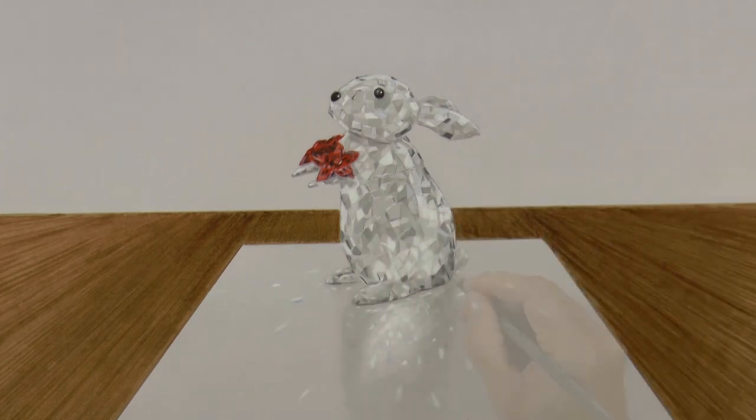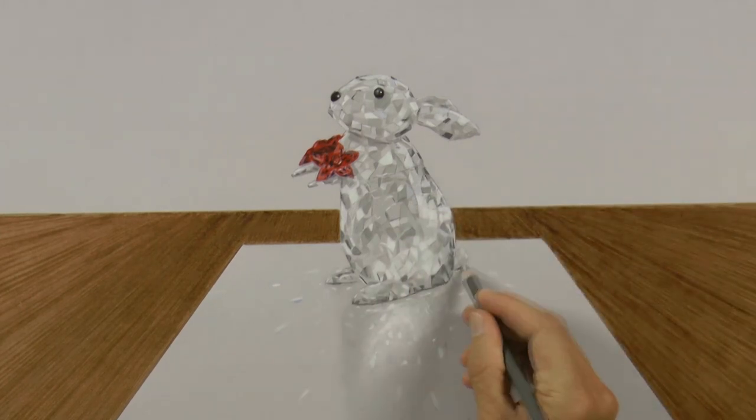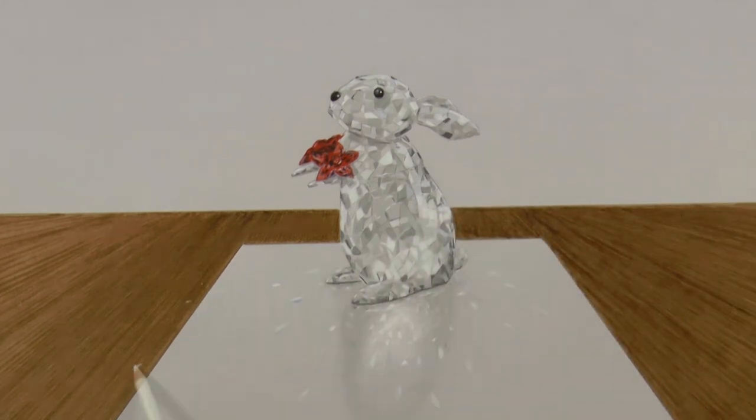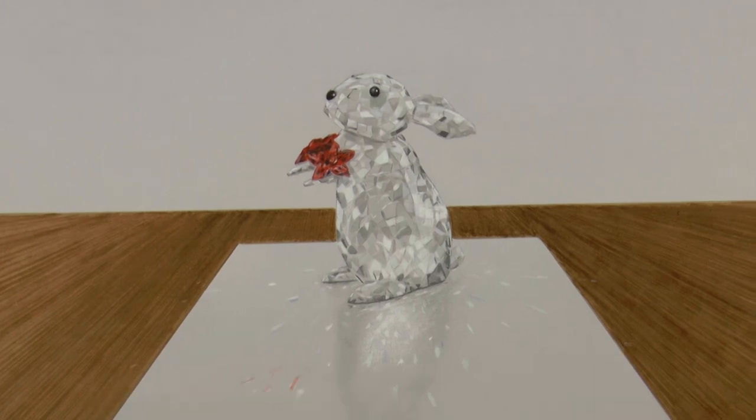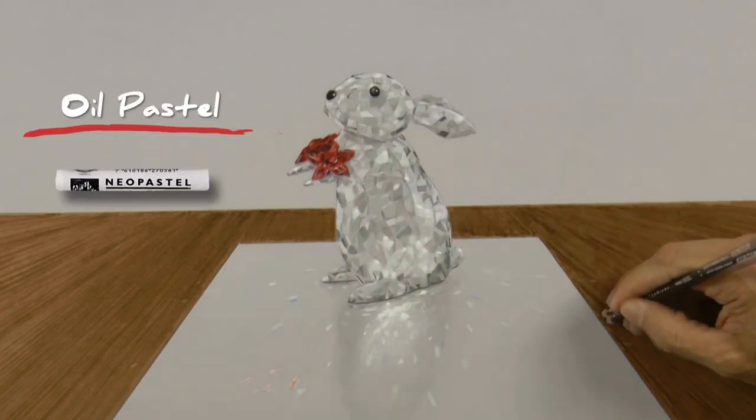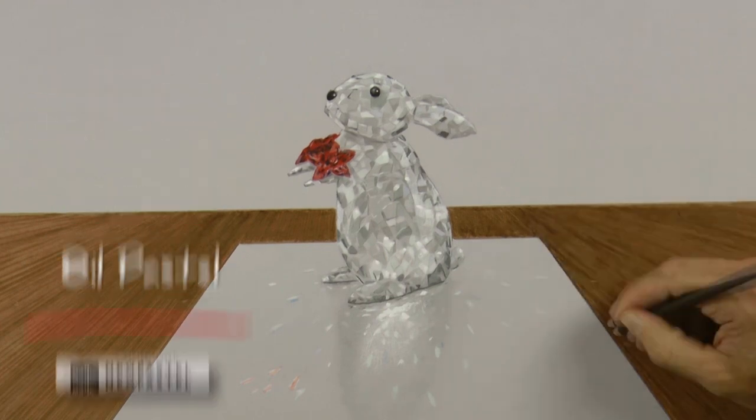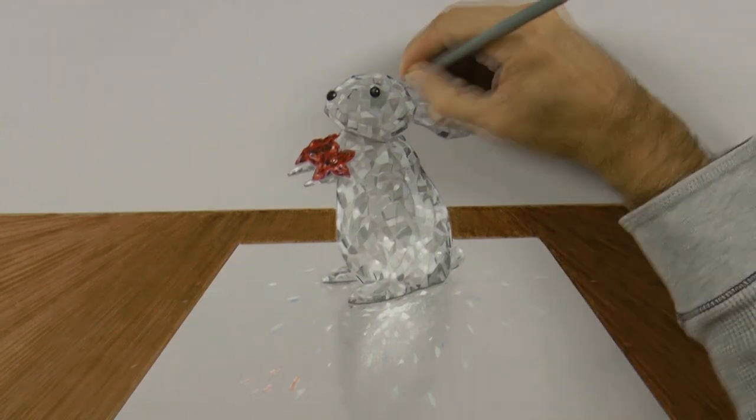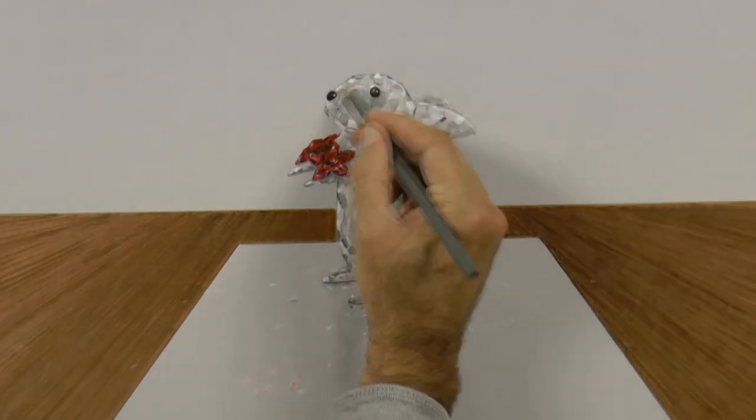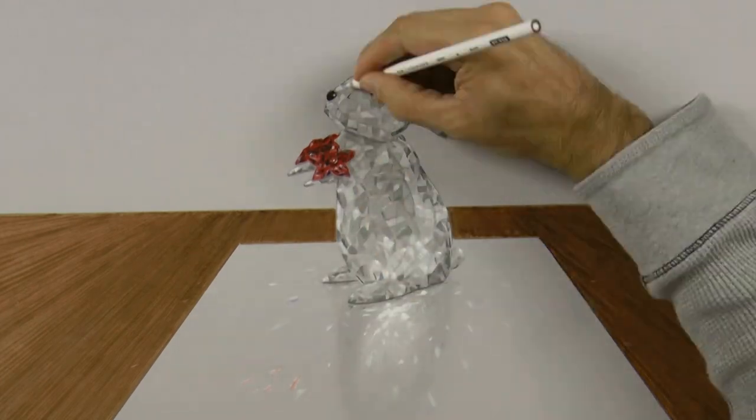Good! With a dark gray we go over some borders, to have the figure stand out more. With an oil pastel we can give it some final white reflections. Very good! We do the last touches and it's ready!